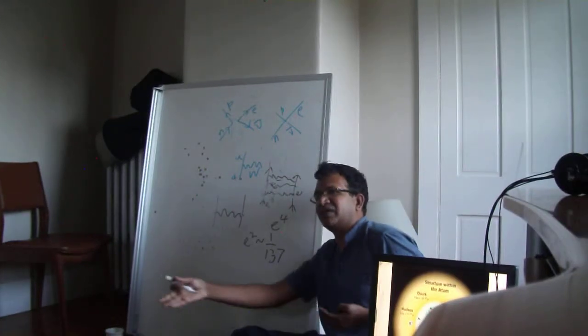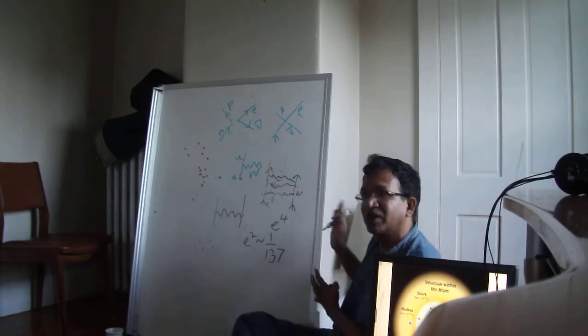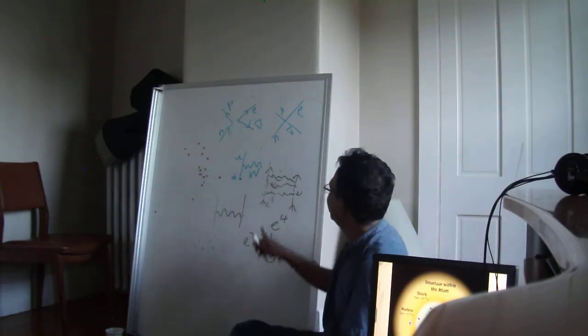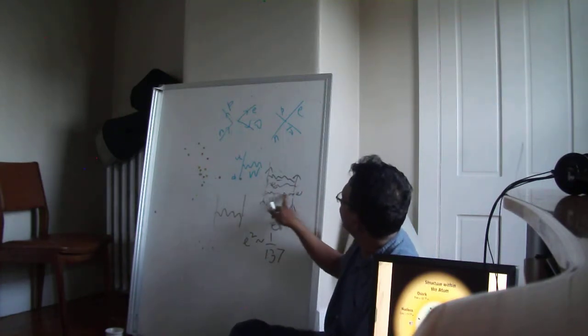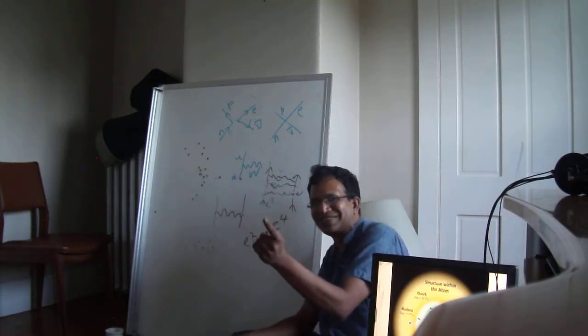We will just improve the accuracy of the calculation, because this square and this cube are smaller and smaller numbers. But the problem is that these diagrams now start involving loops. And once they start involving loops, they actually go to infinity.